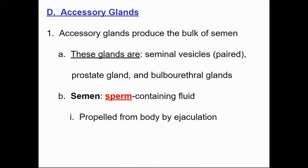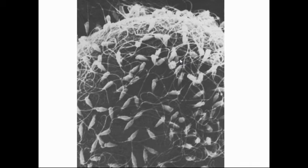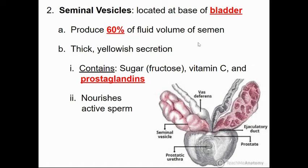In terms of accessory glands, we're talking about the seminal vesicles (two of them), the prostate gland, and the bulbourethral glands. Semen is the sperm-containing fluid. The seminal vesicles are located at the base of the bladder and produce 60% of the volume of semen — a thick, yellowish secretion containing sugar, vitamin C, and prostaglandins (localized hormones) that nourish and activate the sperm.